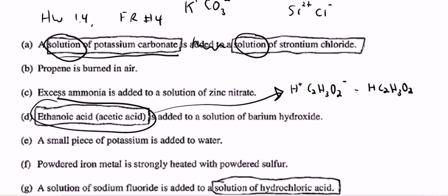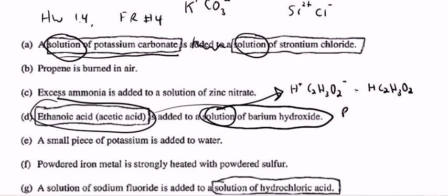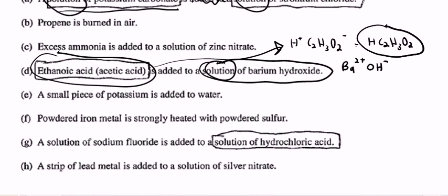Solution of barium hydroxide — there's my water word. Ba²⁺, OH⁻. Out of these two, the ethanoic acid is one you might have to memorize, because that might not be something you've seen before.